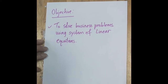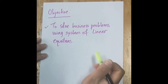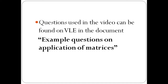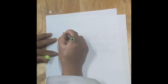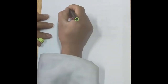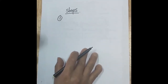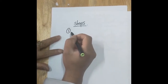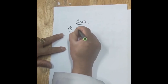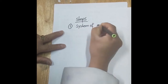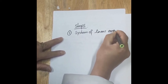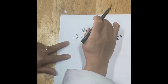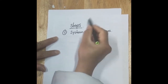The objective of today's lecture is to solve business and economic problems using system of linear equations. Whenever you are trying to solve business or economic problems using a system of linear equations, you should follow these three steps. First, once you go through the information or data given in the question, you should transform that information into the form of a system of linear equations.